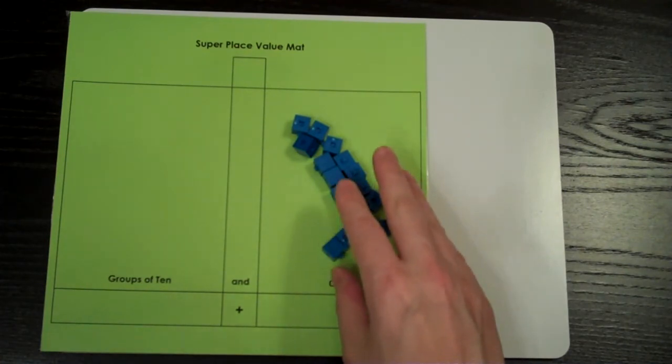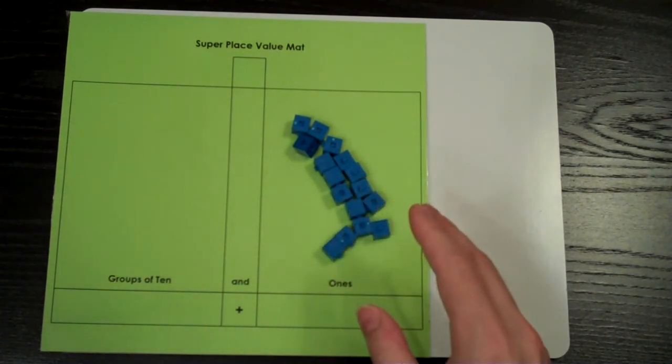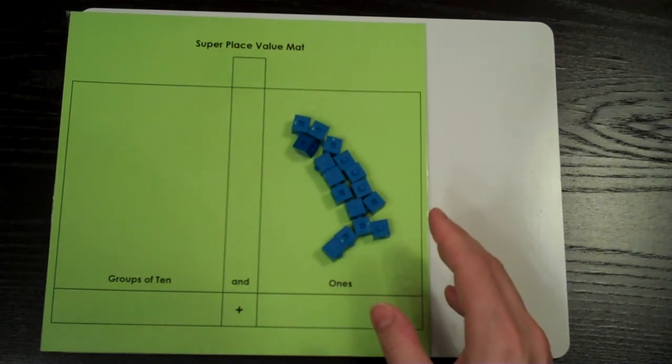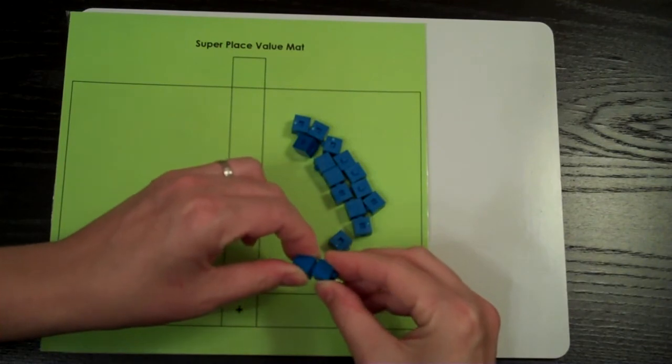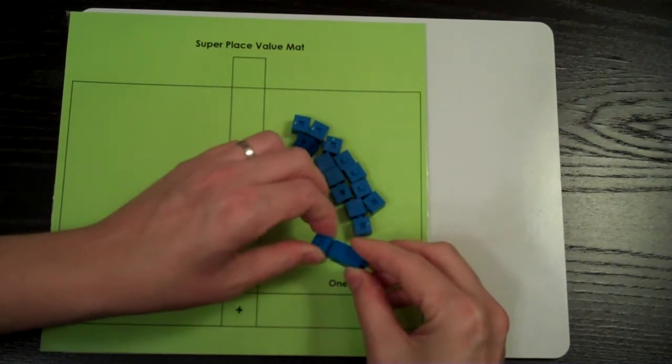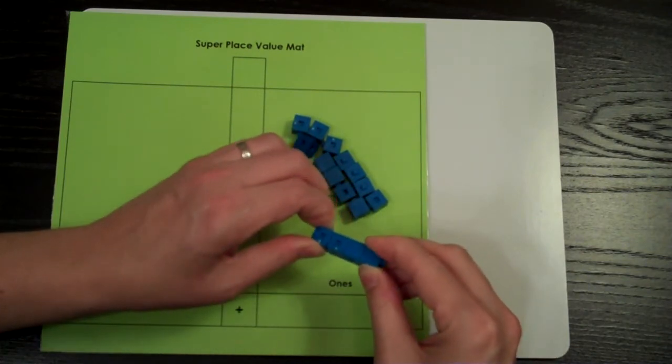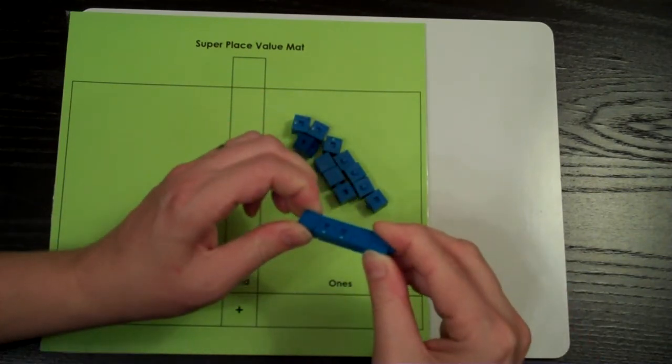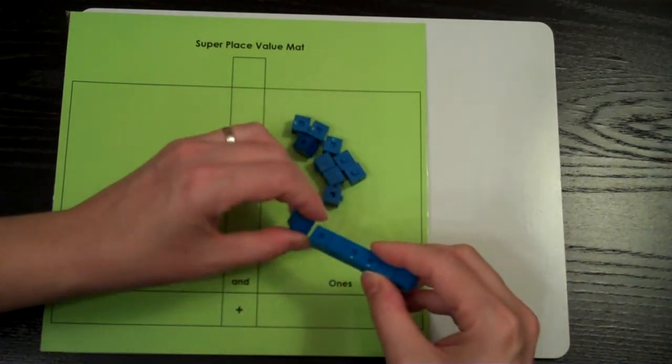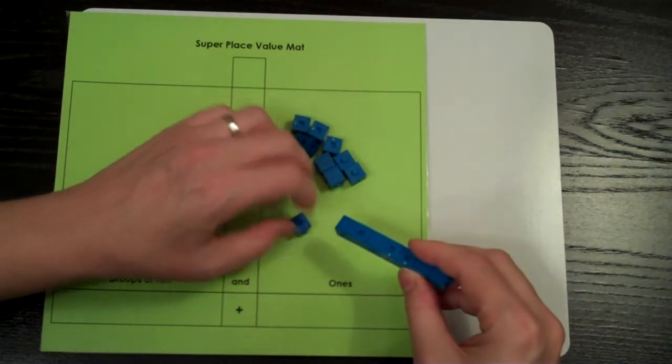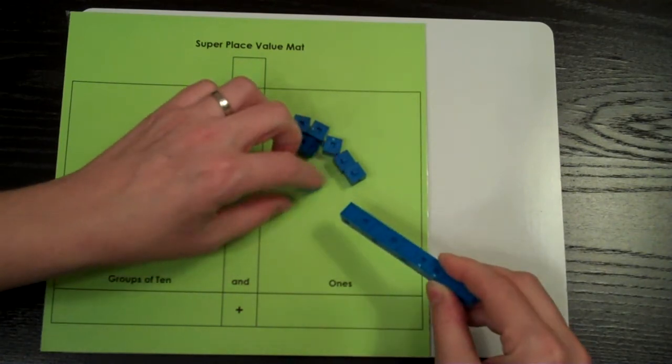Well, we can trade 10 ones for one 10. Let's try. I can make these into a rod: 1, 2, 3, 4, 5, 6, 7, 8, 9, 10.